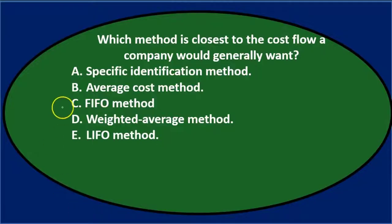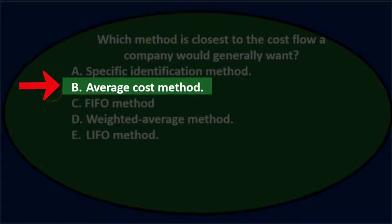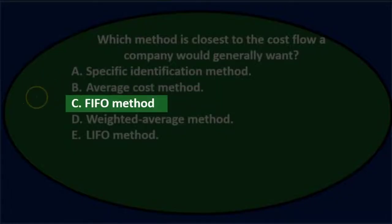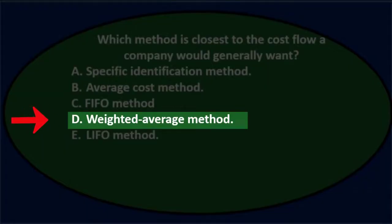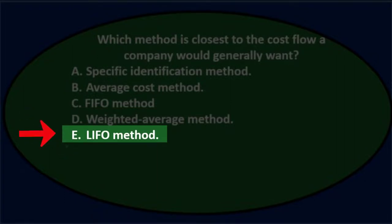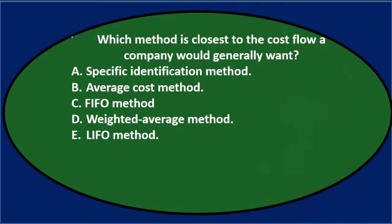First question: Which method is closest to the cost flow a company would generally want? A. Specific identification method. B. Average cost method. C. First in, first out method. D. Weighted average method. Or E. Last in, first out — LIFO method. We'll read the question and see if we can eliminate some of the options.